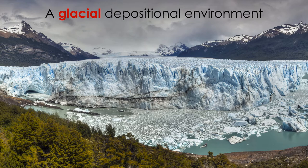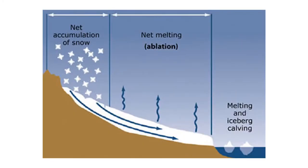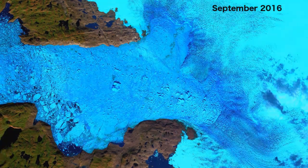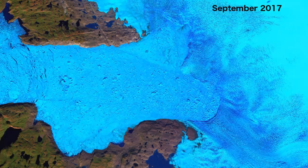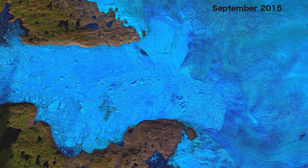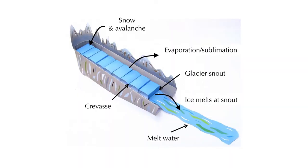A glacier, by definition, is a dense body of ice that is constantly moving under its own weight. During glaciation, a glacier forms over many centuries where snow generally accumulates faster than it melts or sublimates. The weight of the snow and ice causes the glacier to move or flow downhill under the force of gravity. A glacier can move anywhere from three to 100 feet per day.